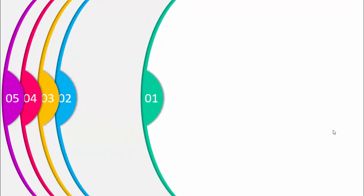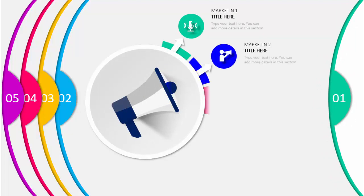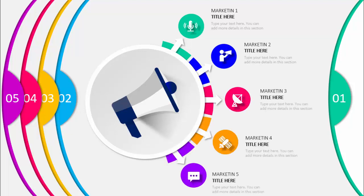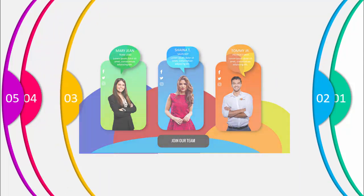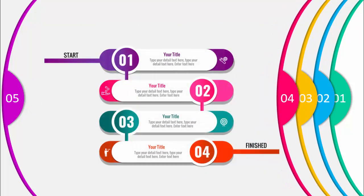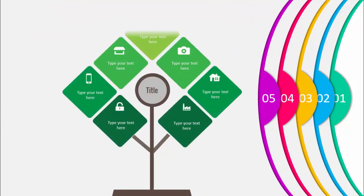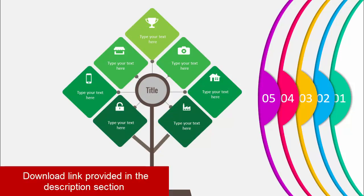You can see here there are five different options and when I click, the first option comes. All the animations I did in my previous videos I have just copied here. When I click it will show you the second, the third, the fourth slide and the last fifth. Here I have used the Morph transition and to use this you need to have at least PowerPoint 2019 or Office 365 version.